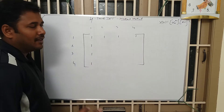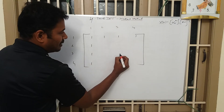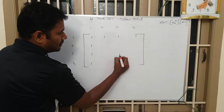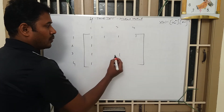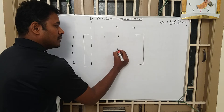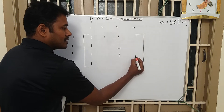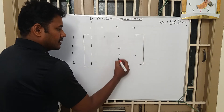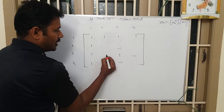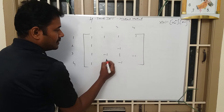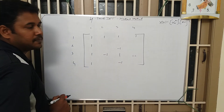Among these 9 elements, the middle element is going to be +1. The one above it, the one on the right-hand side, the one below, and the one on the left-hand side — everything is going to be -1.